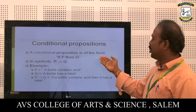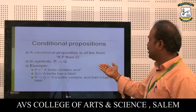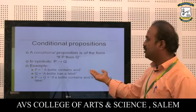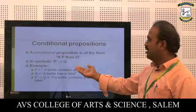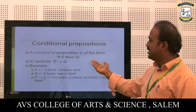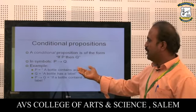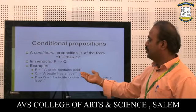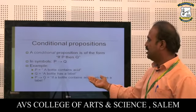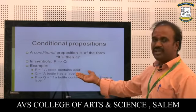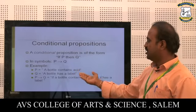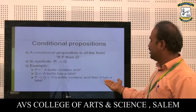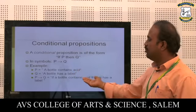Conditional proposition: A conditional proposition has the form 'If P then Q,' with symbol P → Q. Example: Let P equal to 'A bottle contains an acid' and Q equal to 'The bottle has a label.' The conditional statement is: 'If a bottle contains an acid, then it has a label.'